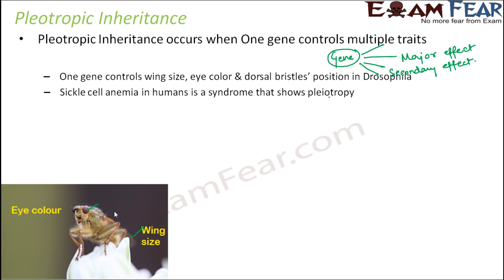That gene has one defect — one defective gene — but it causes many different impacts. Now when these effects are related to each other, it is called a syndrome. If all of the multiple effects of a gene are somewhere related to each other, then those effects together are called a syndrome, and we say that a pleiotropic gene is responsible for that particular syndrome.